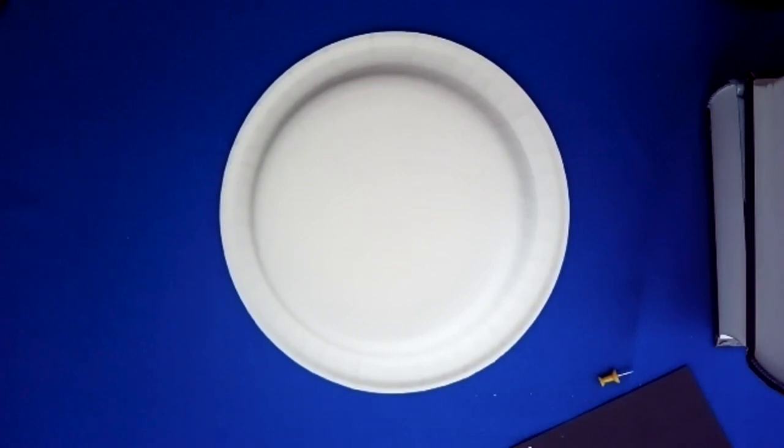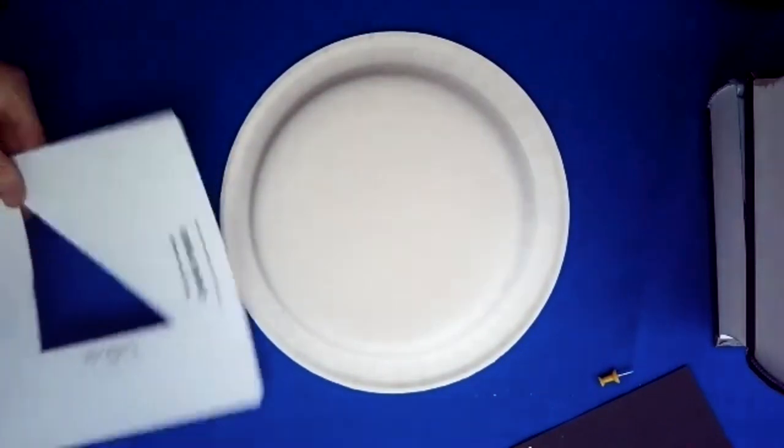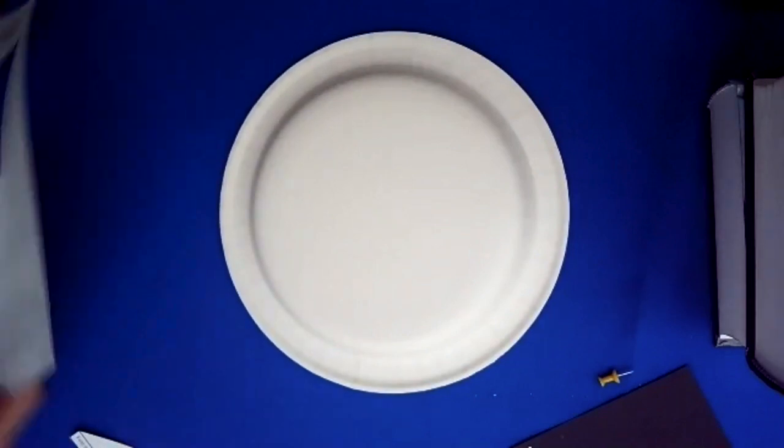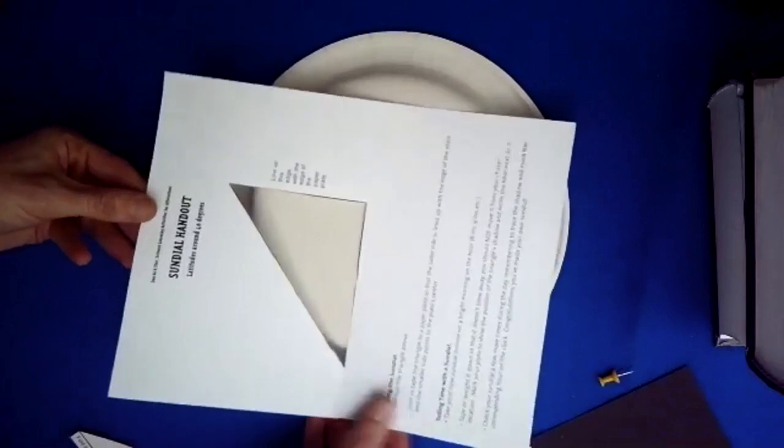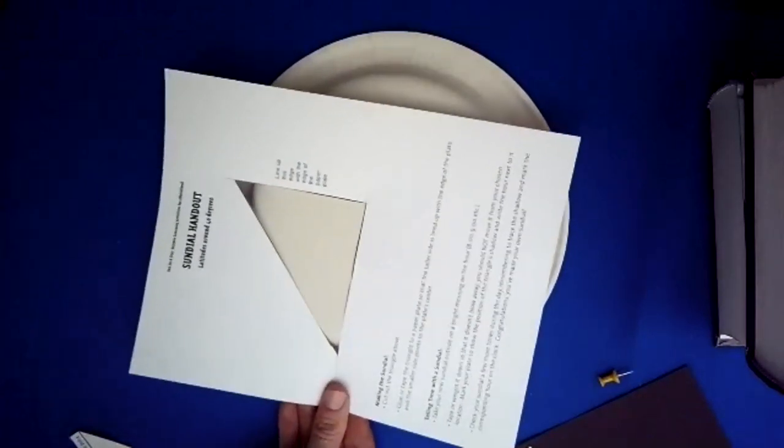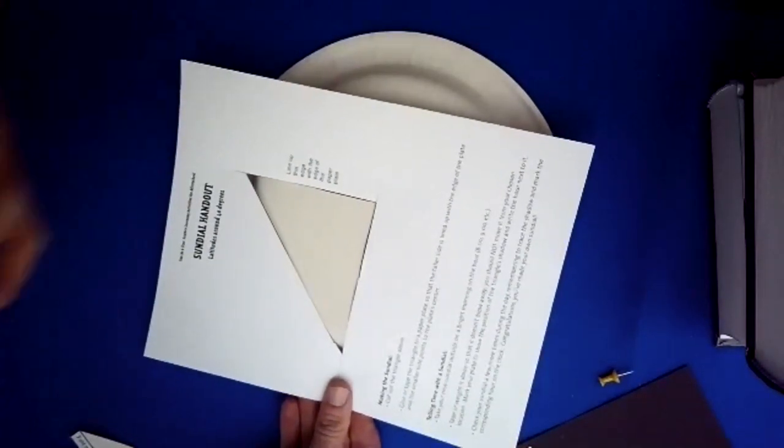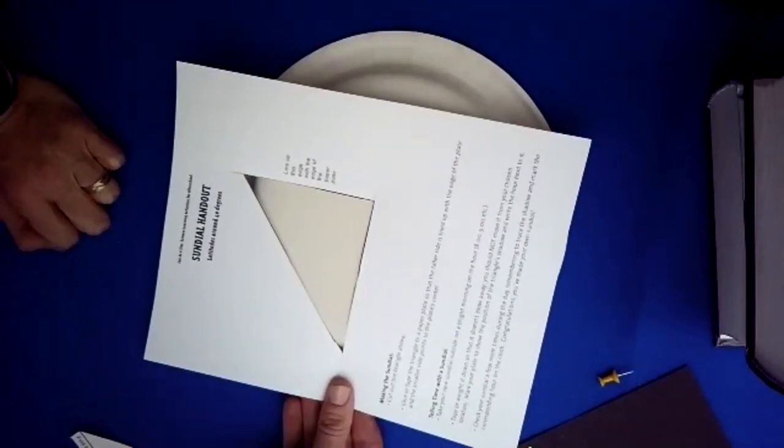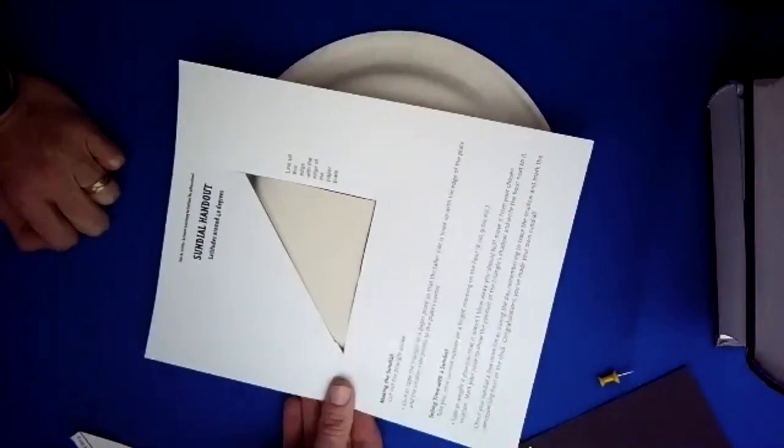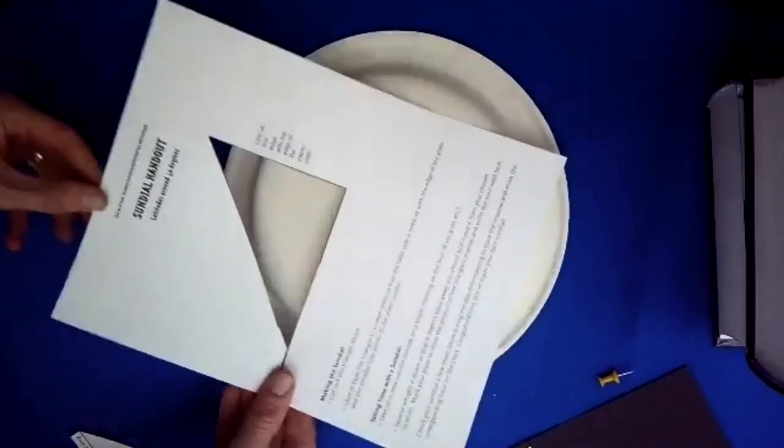This is 'Make a Sundial,' and it's just as easy as you think. On our website, you'll find this template with instructions for a whole curriculum about shadows and the sun moving. In the library, you might not have time for that, especially for a 10-minute program.